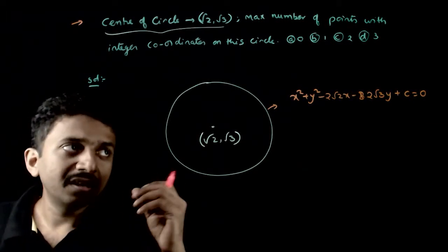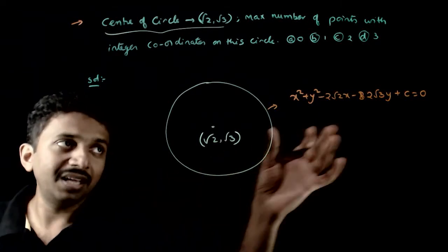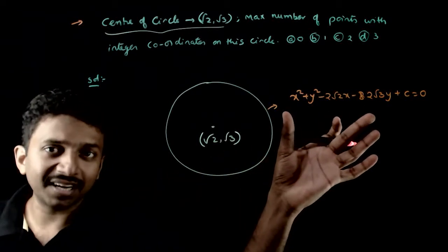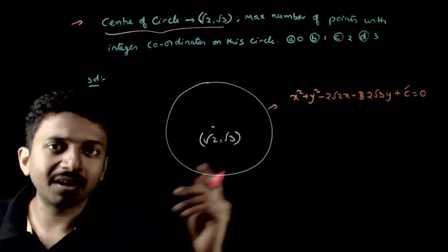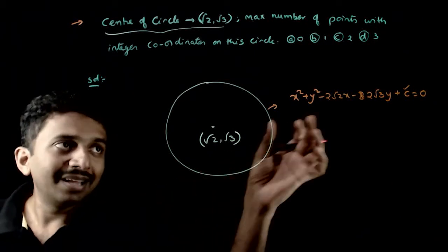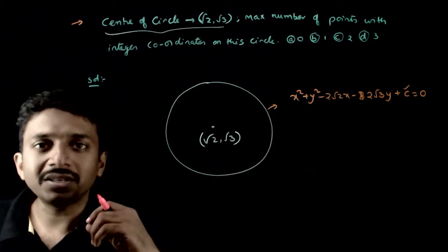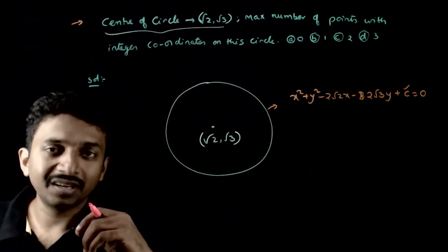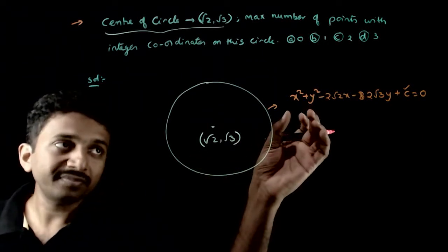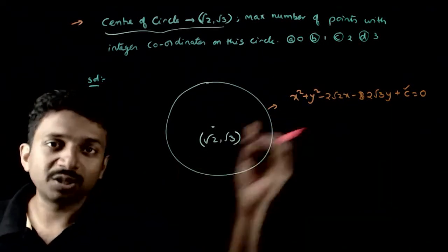So now you have to see, in this circle, c is a particular number. How many integer points can be? Integer points mean x and y both have to be integers.